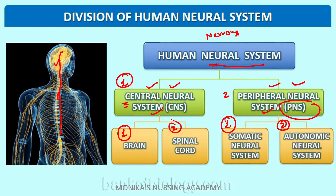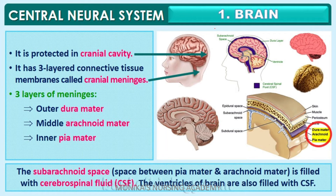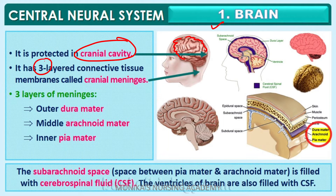First we will discuss regarding the brain. The brain is present in the cranial cavity — here you can see this is the cranial cavity. Next, there are three-layered meninges, which are basically layers present around the brain and the spinal cord.